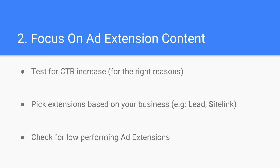So when and how should you use ad extensions? You can use them for almost anything. Google continues to produce additional ways that advertisers can get their message across to users. As of now, the available ad extensions you can create include: location, sitelink, callout, structured snippet, price, app, image, lead form, promotion, and call.